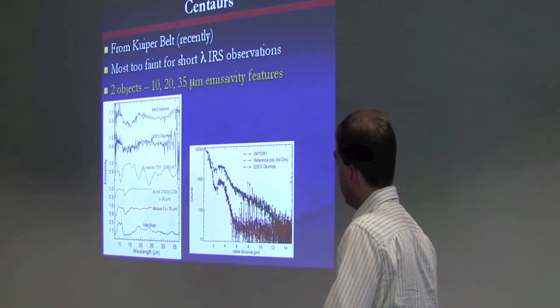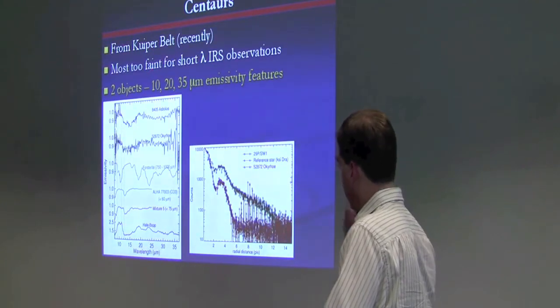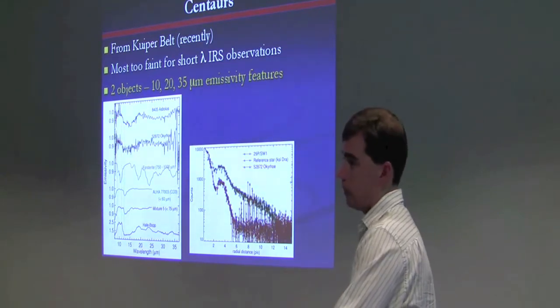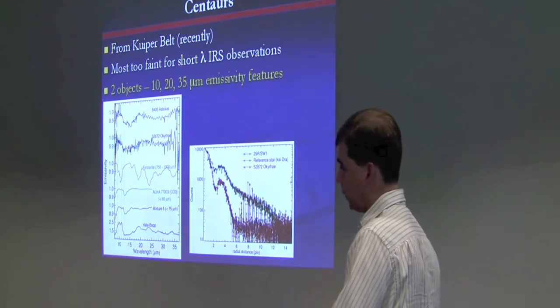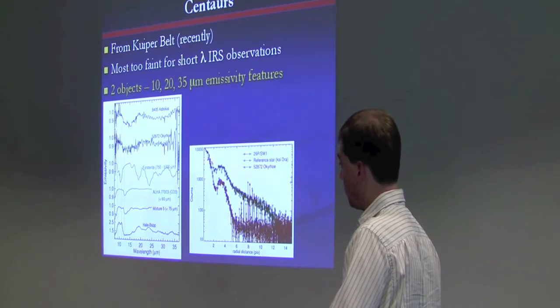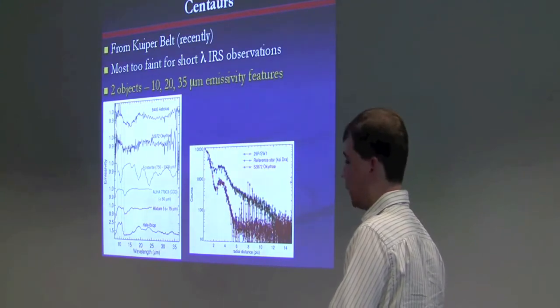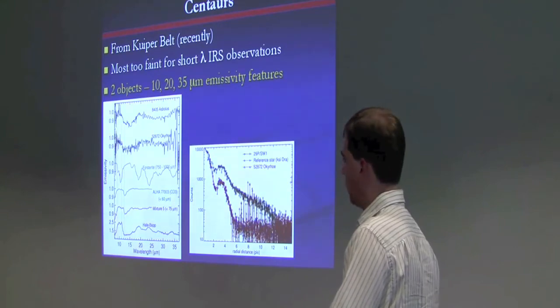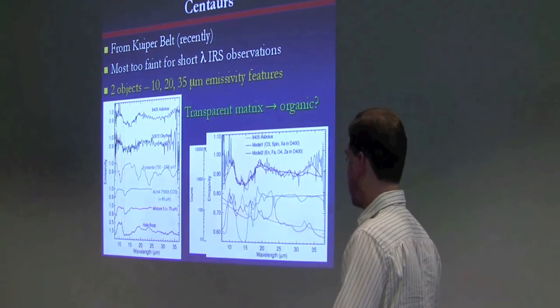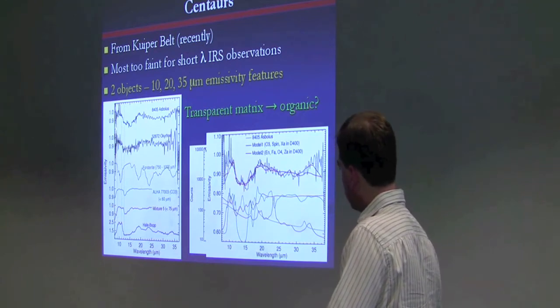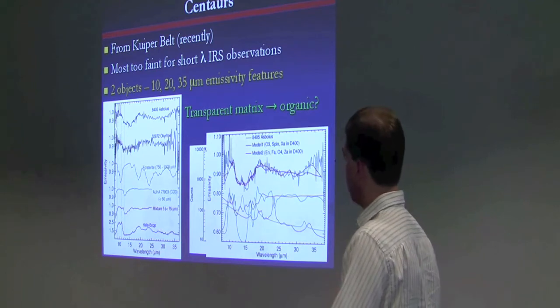Centaurs are further out in the solar system. Recently, from the Kuiper Belt, most are too faint for short wavelength IRS observations. But we were able to observe two objects down to the 10-micron region, Nessus and Okoroe. Both of these have visible and near-infrared spectra that are similar to Hector's visible and near-infrared spectrum. Featureless and moderately red sloped. They're fairly similar in Spitzer wavelengths too with the 10-micron peak and 20 and maybe 35-micron emissivity features. We can do the same comparisons. And again, we don't see any sign of extended emission. This isn't an active Centaur. We're seeing the regolith of this object. And again, the same different models embedding silicates in an organic matrix is our best guess for what's going on with these Centaurs.